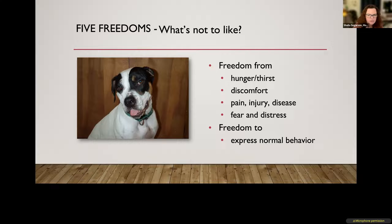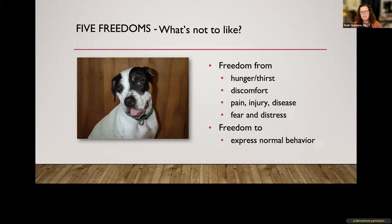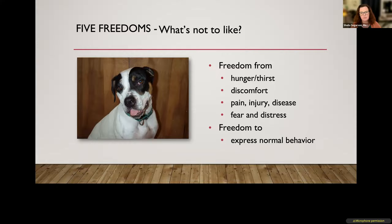The Five Freedoms talk about making sure that we have freedom from things that can negatively impact our welfare — things like hunger and thirst, discomfort, pain, fear and distress — and also the freedom to express normal behavior. But we've learned a lot since we started using the Five Freedoms, and that's why I would suggest that the Five Domains model is a newer model that we should consider and probably start using instead of the Five Freedoms approach.